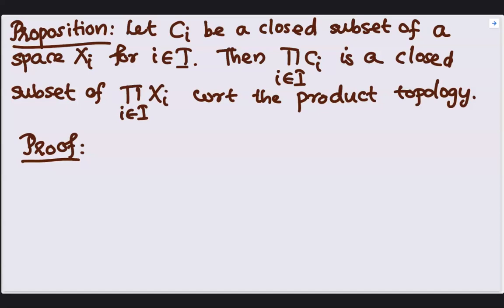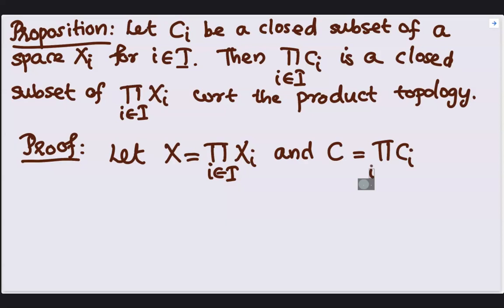To prove it, let us label the Cartesian product, product X_I as X and product C_I as capital C. We need to show that C is closed.